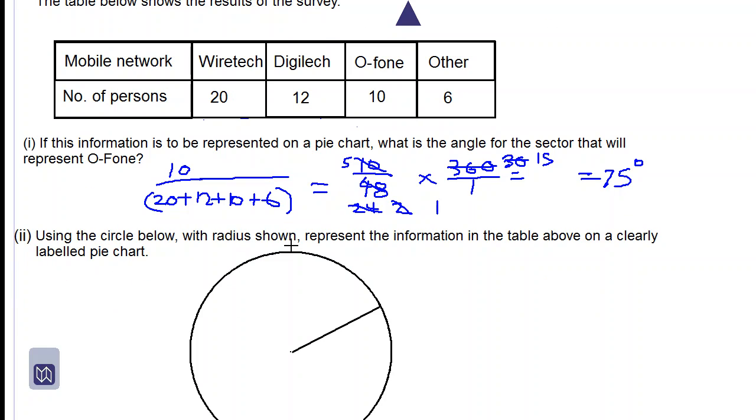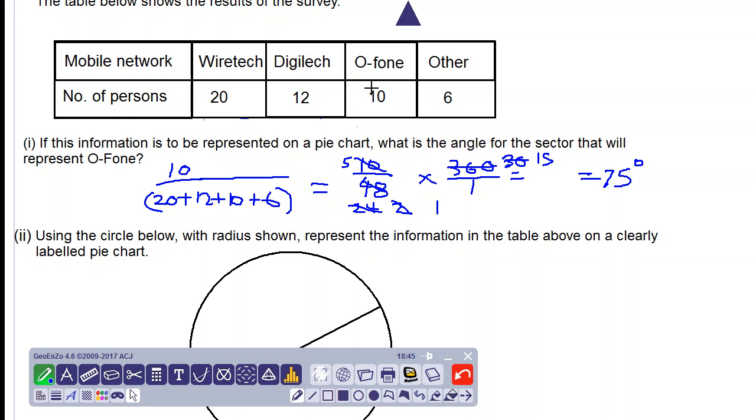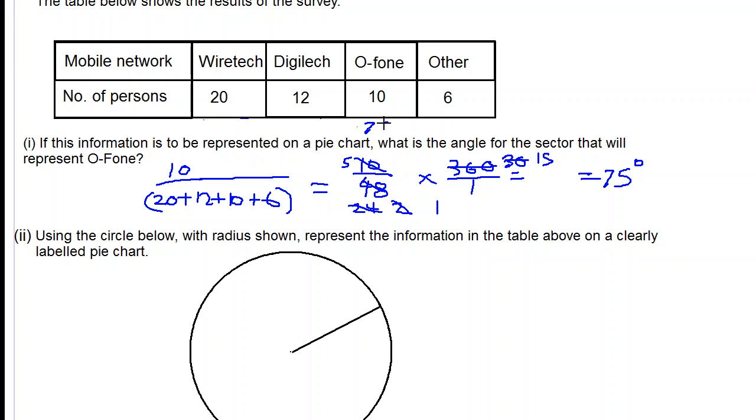Part 2: Using the circle below with radius shown, represent the information in the table above on a clearly labeled pie chart. So we know that the O-fone has an angle of 75 degrees.